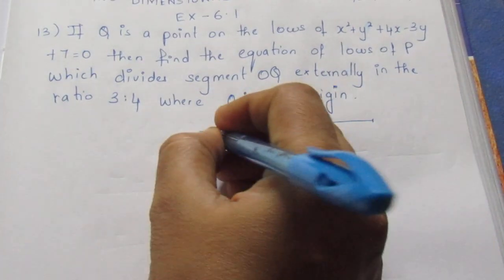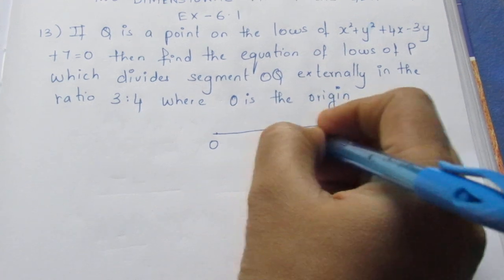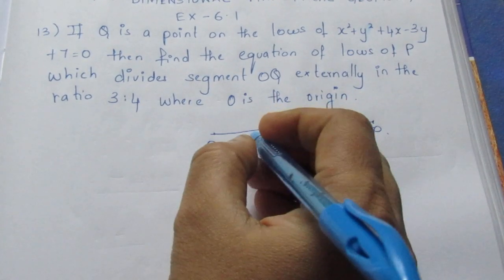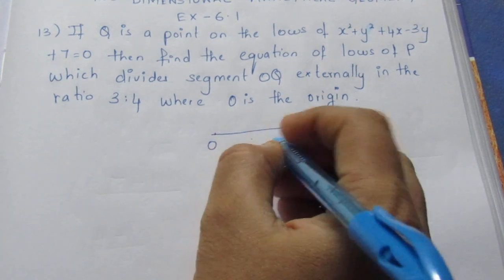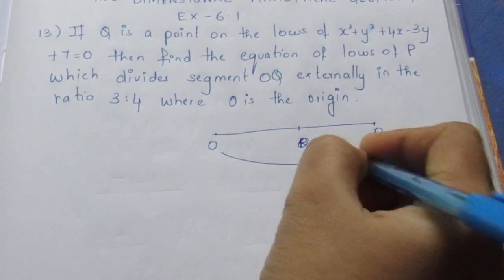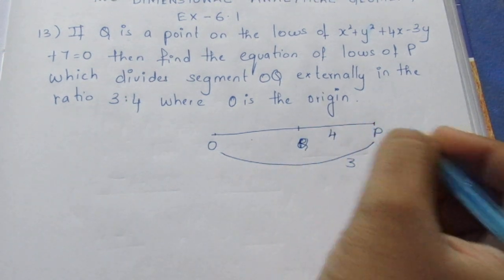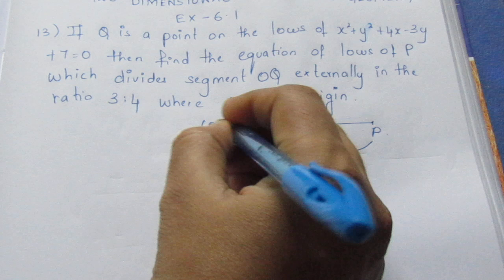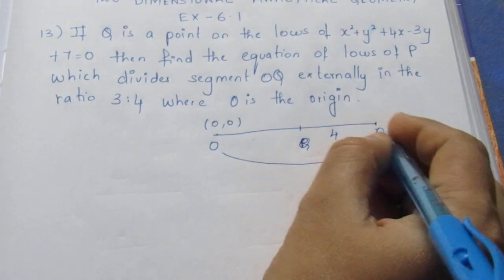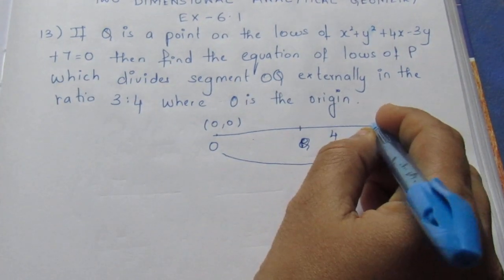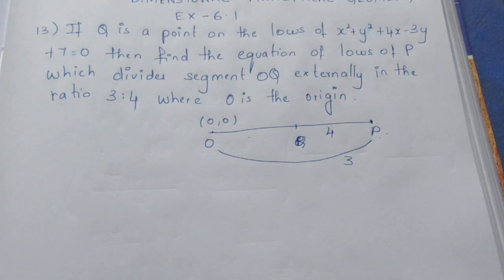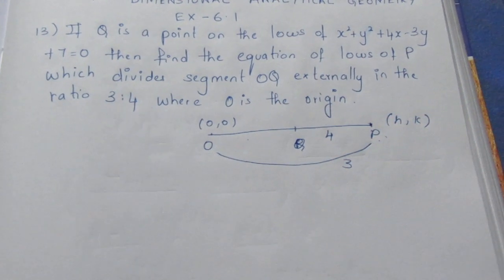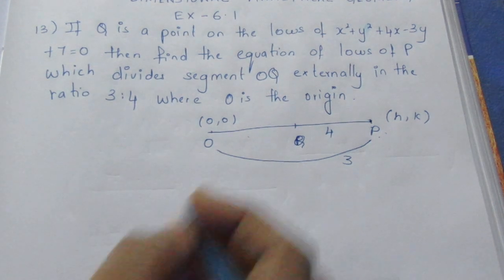We will divide OQ externally in the ratio 3 is to 4. O is the origin point, so OP is 3 and QP is 4 — ratio 3 is to 4. Now we know Q and P. When we find the point P, we can find h and k, and we find a and b.